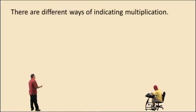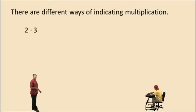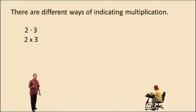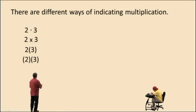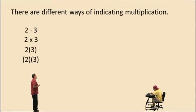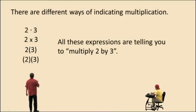There are different ways of indicating multiplication, Charlie. We can use a little dot, and that's most commonly used, or we can use this little cross. Now sometimes we don't use the cross in algebra because we mistake it for an x. We can put a number outside of parentheses with no indicated operation, and that means you are to multiply. If you put both numbers in parentheses with no operation in between, that means multiply the two numbers together. All these expressions are telling you to multiply two by three.